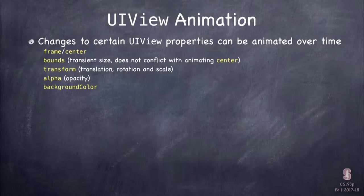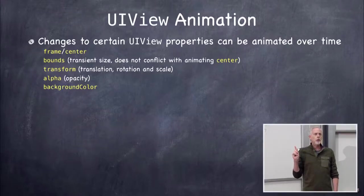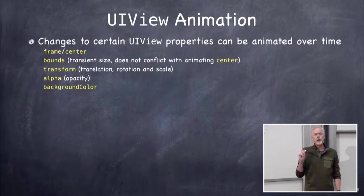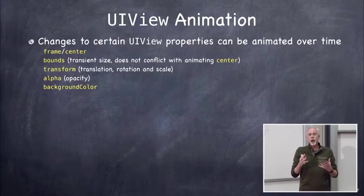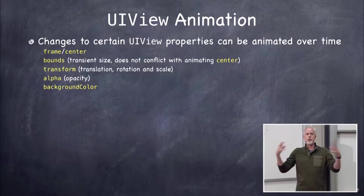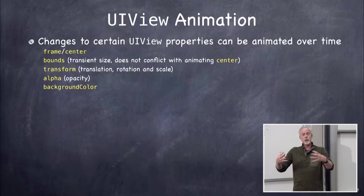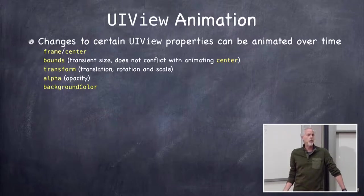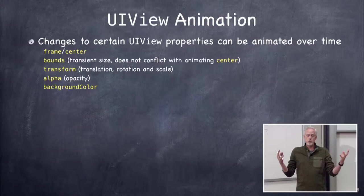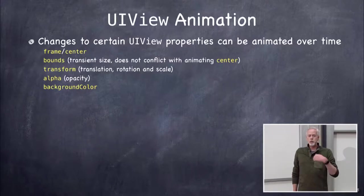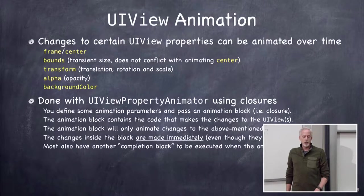The first is UIViewPropertyAnimation. You can animate these yellow properties on your view — this is really the only things you can animate using this mechanism. You've got the frame and center for animating position, bounds for animating size, transform which is super powerful (we saw rotation and scaling with a card), opacity for fading views in and out, and background color.